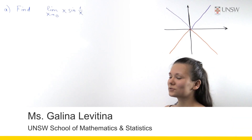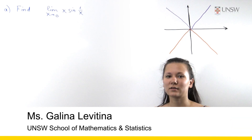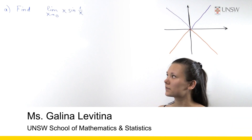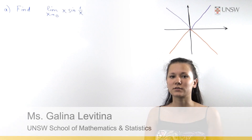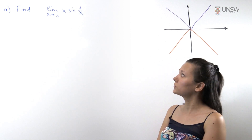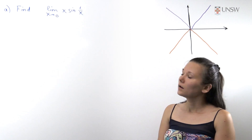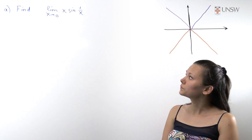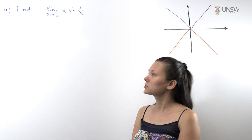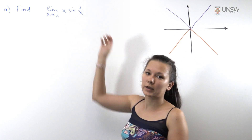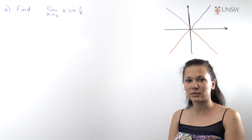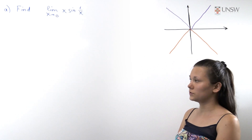Hello! In this question we will be looking at how to use the pinching theorem to find the two-sided limits of some function at some fixed point. In our case our function is x sine 1 over x and we need to find its limit when x goes to 0.